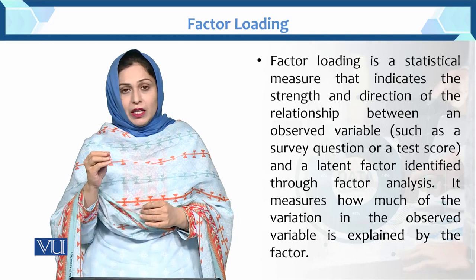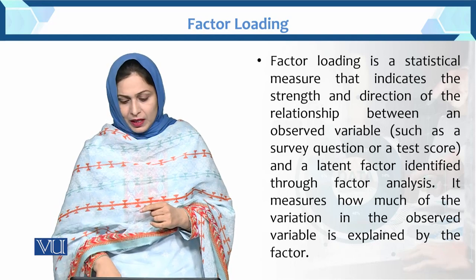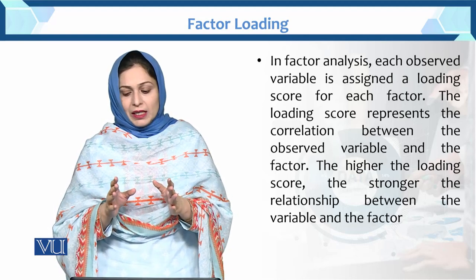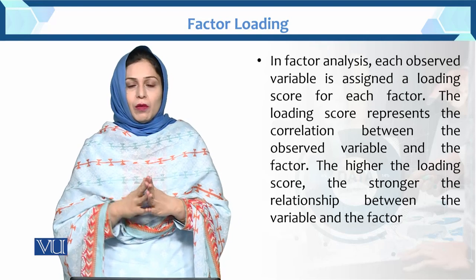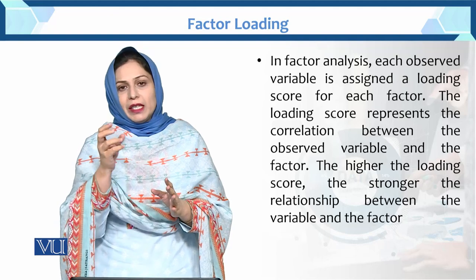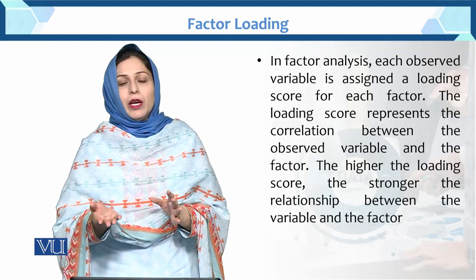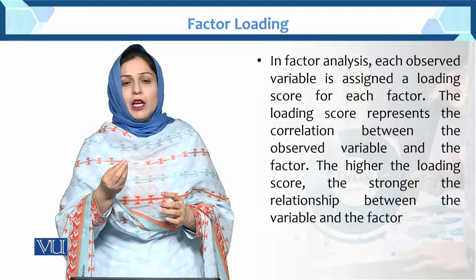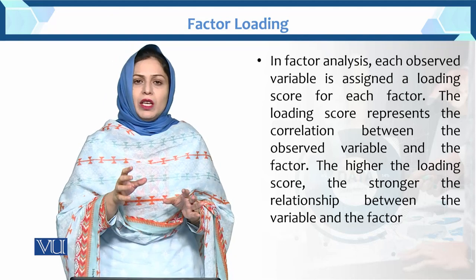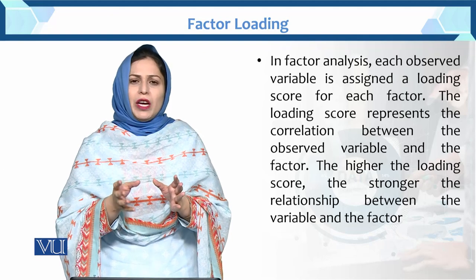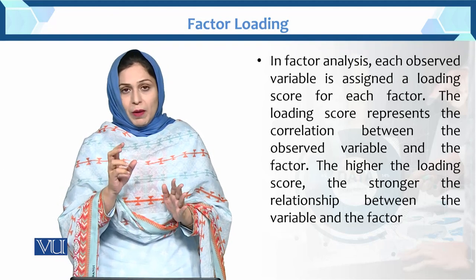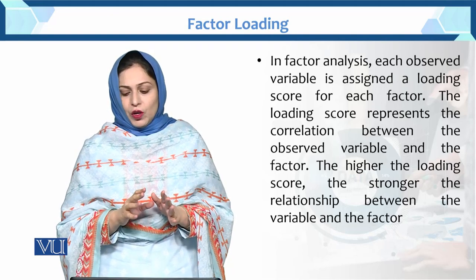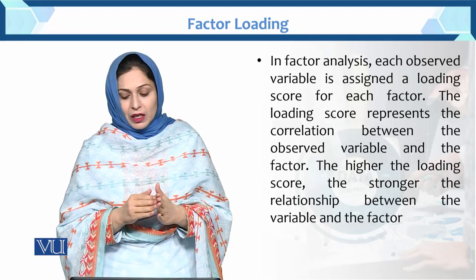The key measure is how much of the variation in the observed variable is explained by the factor. In factor analysis, each observed variable is assigned a loading score for each factor. This loading score is the lambda value mentioned previously. It is called the factor loading score, and it comes as a numerical value — for example, 0.6 — indicating a strong or moderate correlation between the factor and the items. The loading score represents the correlation between the observed variable and the factor.